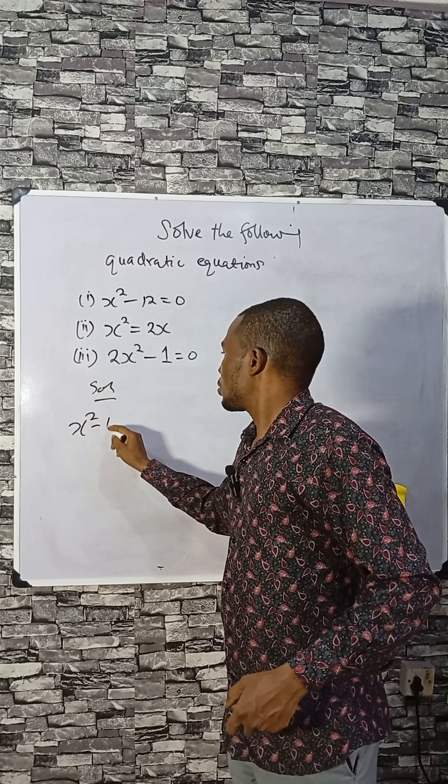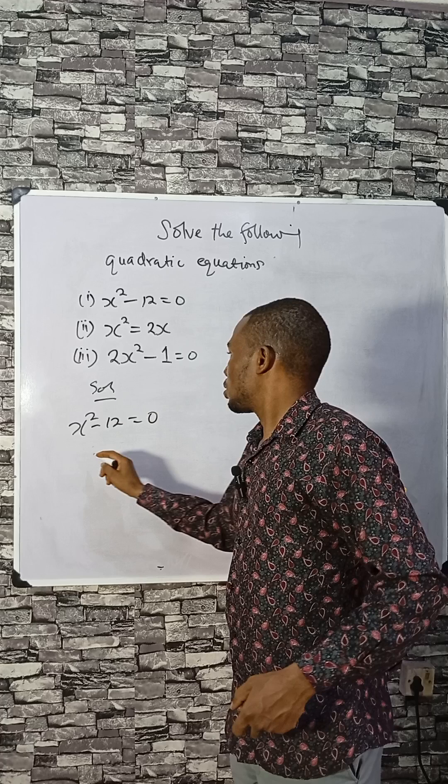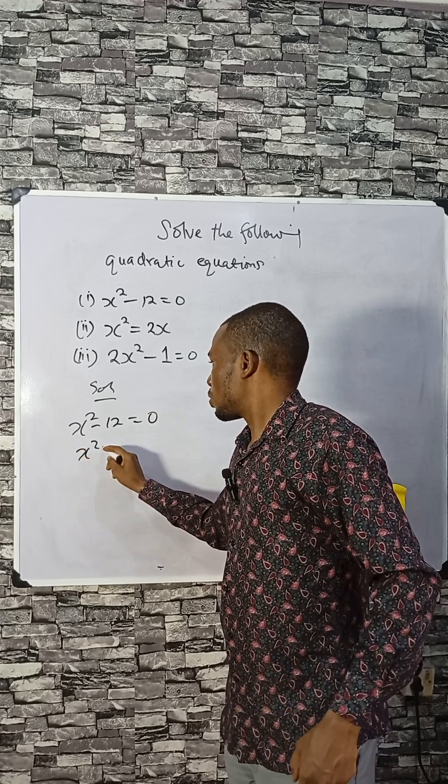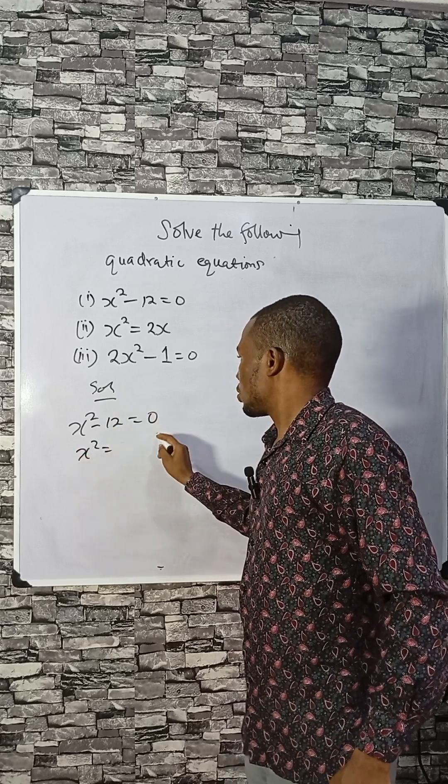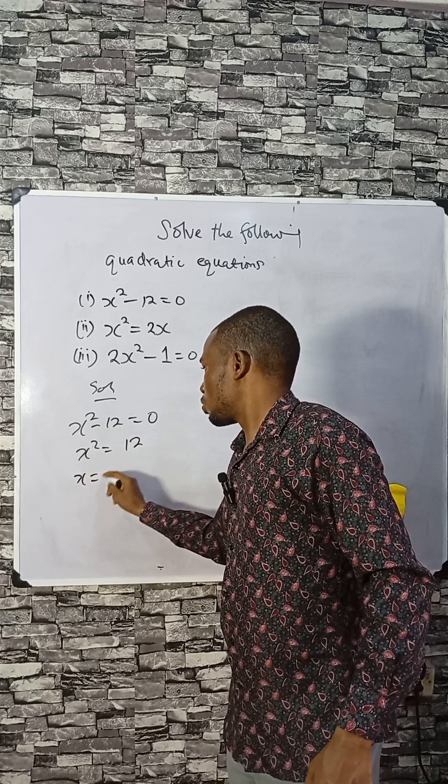x² - 12 = 0. That means x² equals 12, so x equals plus or minus...